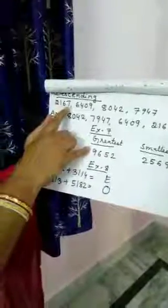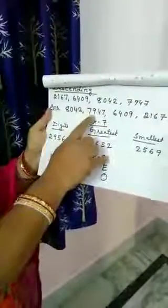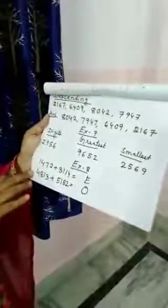Descending Order means bigger to smaller. Here are some numbers: 2167, 6409, 8042, 7947. Pick out the bigger number — 8042. Next: 7947, then 6409, and finally 2167. So we are writing from bigger to smaller.